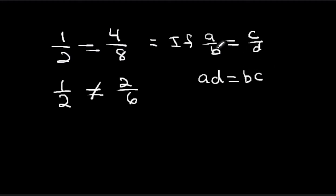Take a look at the denominators b and d. You'll also hear it stated that b and d are not equal to zero, and the reason why is because any number divided by zero is undefined.